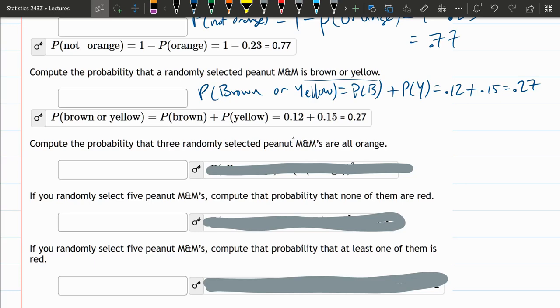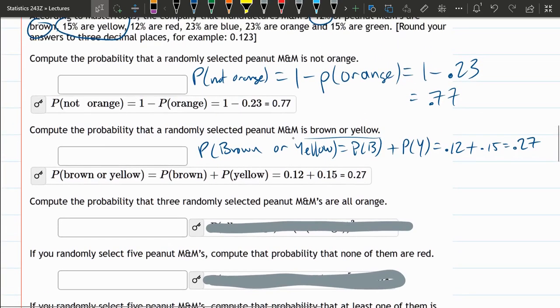Next one, three randomly selected are all orange. So this is probability of orange, probability of orange, probability of orange. We want three things to happen in a row. And when we want orange and orange and orange, we multiply.